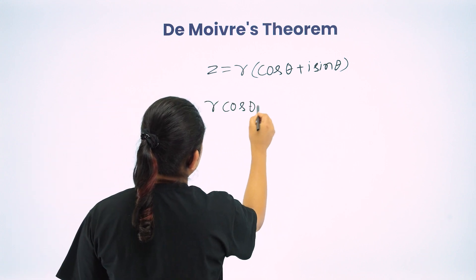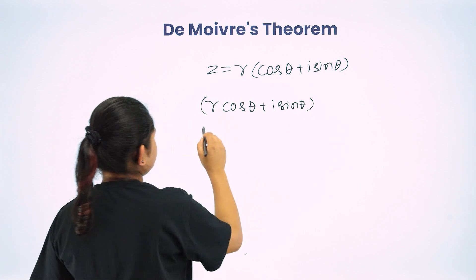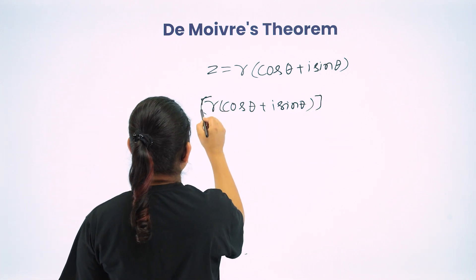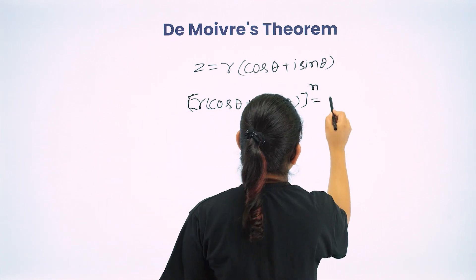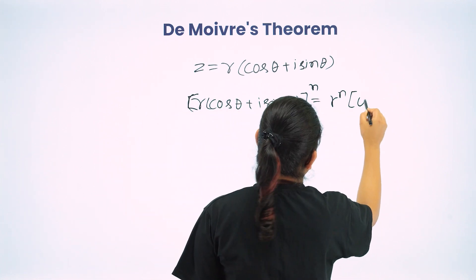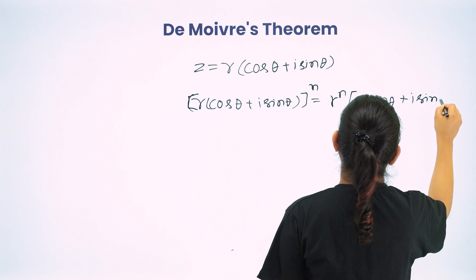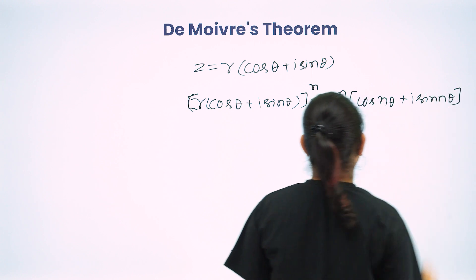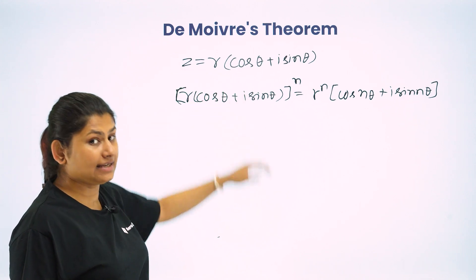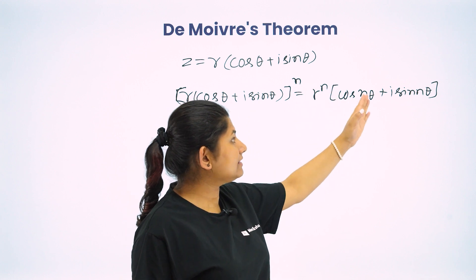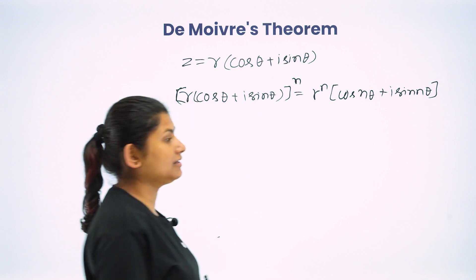r cos theta plus i sin theta to the power n equals r to the power n times cos n theta plus i sin n theta. This is what we call De Moivre's theorem. So we need to prove this.